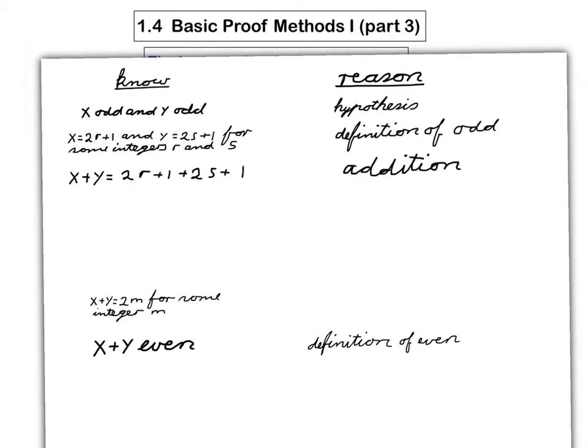Now, was that a useful thing for me to do? Does that help me to link this step with this step? Well, if I combine these terms, you see my aim is to write x plus y as 2 times something. So if you combine all of these terms, you see you get 2R plus 2S,